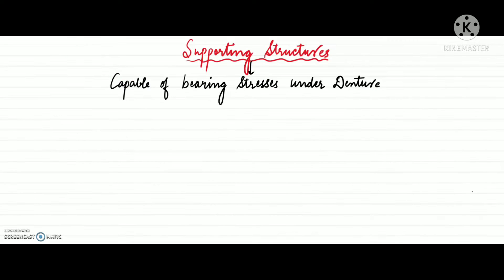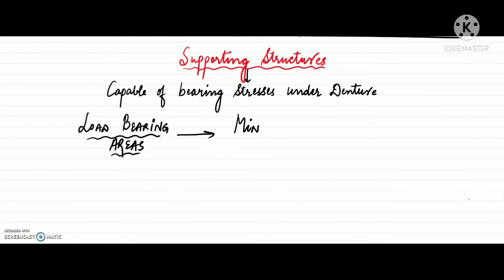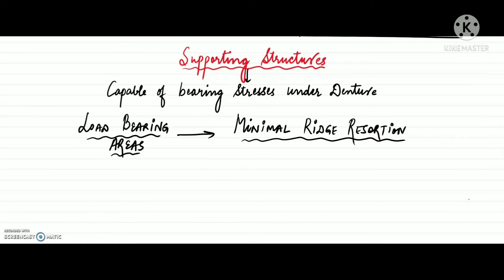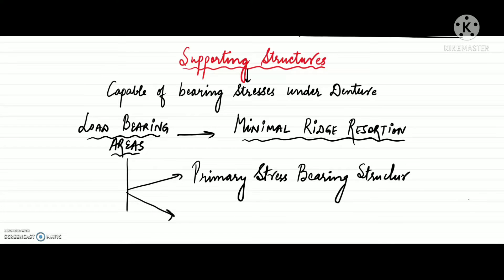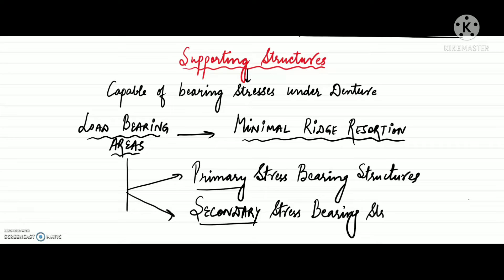Supporting structures are those structures which are capable of bearing stresses under the denture. Since these are load-bearing areas, they show minimal ridge resorption under constant load. Therefore, the denture base should be designed such that most of the load is concentrated on these supporting areas. These supporting structures can either be primary or secondary stress-bearing structures.